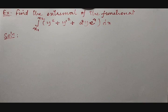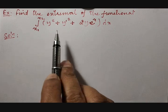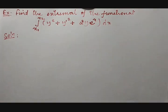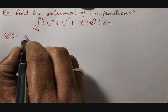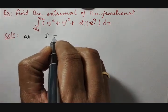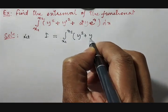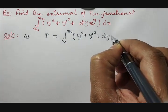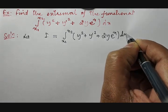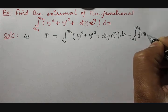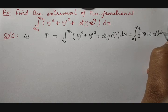In this session, we are going to discuss an example of finding the extremal of the functional: integration between x1 to x2 of y squared plus y-dash squared plus two times y into e raised to x, with respect to x. We will take this given example as I, which equals integration between x1 to x2 of the functional f(x, y, y-dash) with respect to x.